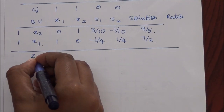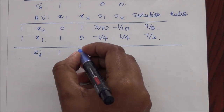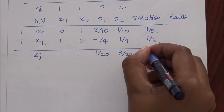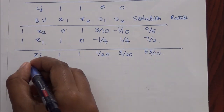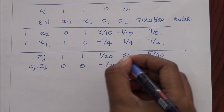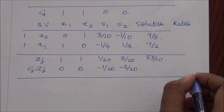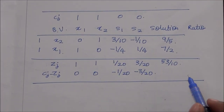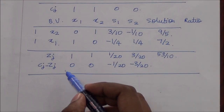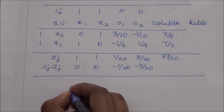We calculate the value of zj — for example, 1 into 0 plus 1 into 1 — and similarly calculate the other zj values. We then calculate cj minus zj again. For maximization problems, we may stop iterating when all cj minus zj values become less than or equal to 0. Over here all values are less than or equal to 0, so we have arrived at the simplex solution.